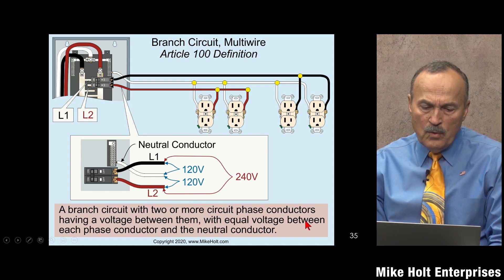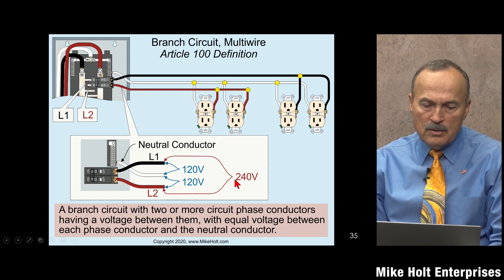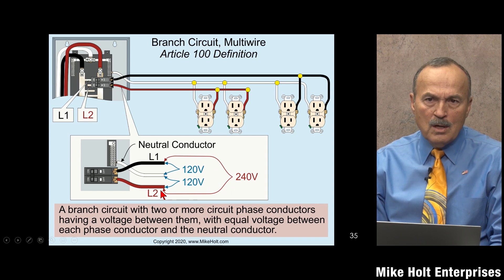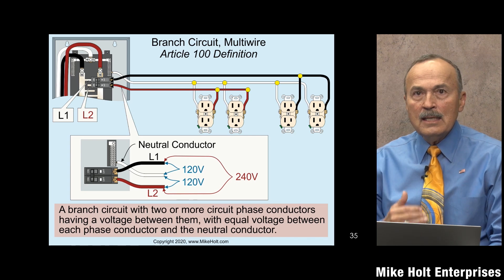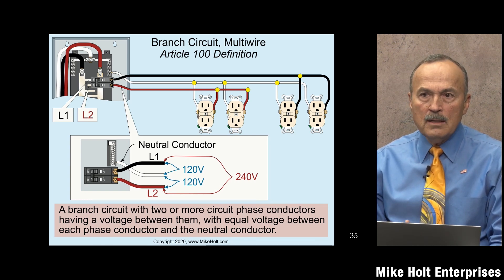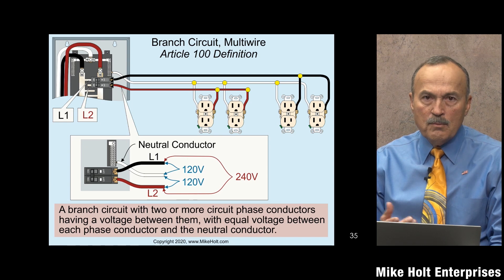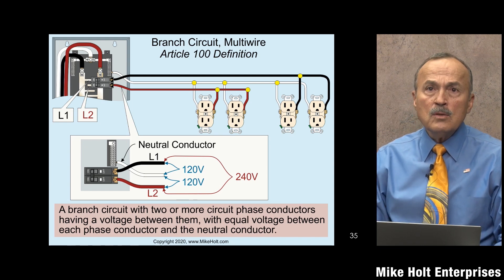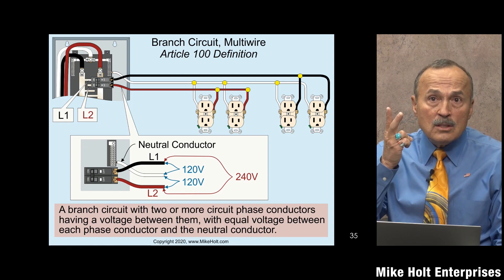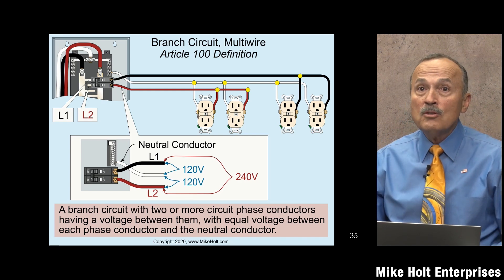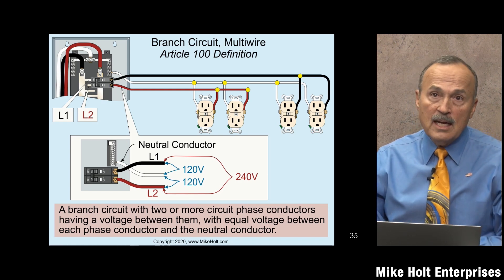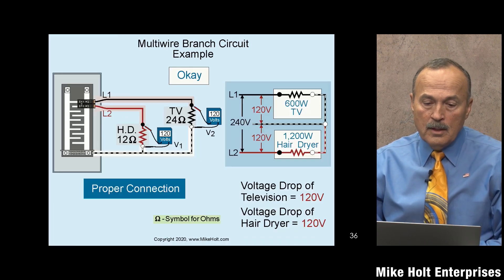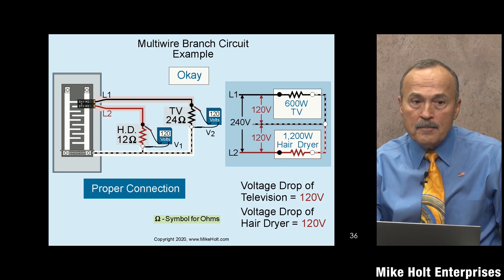The voltage between the phase conductors is 240 volts, with equal voltage between each phase conductor. In a three-phase system — A to B, B to C, A to C — all voltages are equal, like a wye system. So a multi-wire branch circuit lets you use two hots and one neutral, saving a wire instead of running a separate hot and neutral for each circuit.